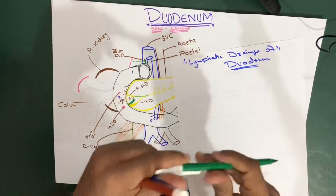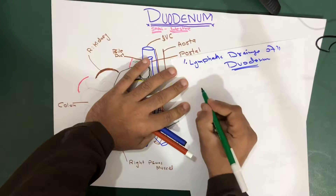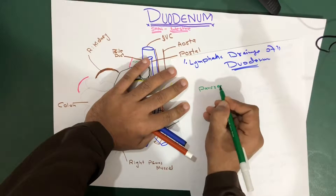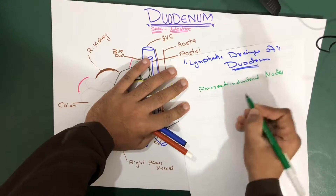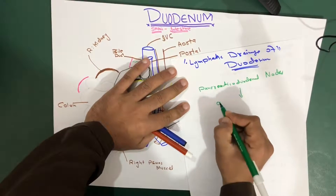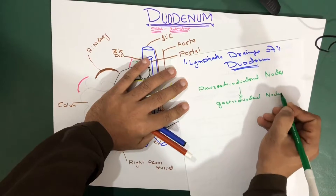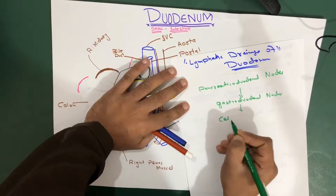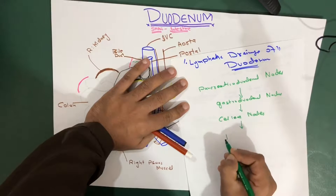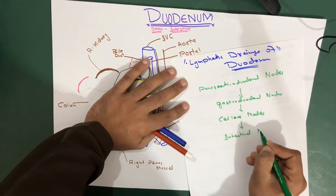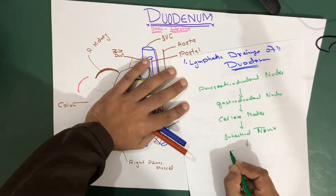The lymph from your duodenum actually drains first into the pancreaticoduodenal nodes. The pancreaticoduodenal nodes drain their lymph into the gastroduodenal nodes, and the gastroduodenal nodes drain into your celiac nodes. The celiac nodes then drain into the intestinal trunk.